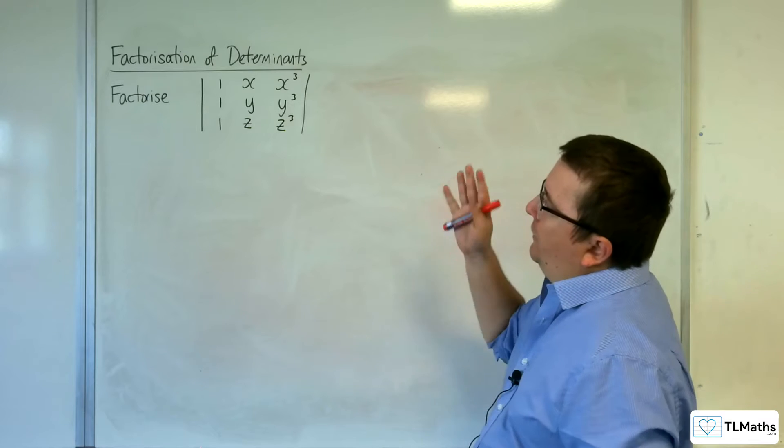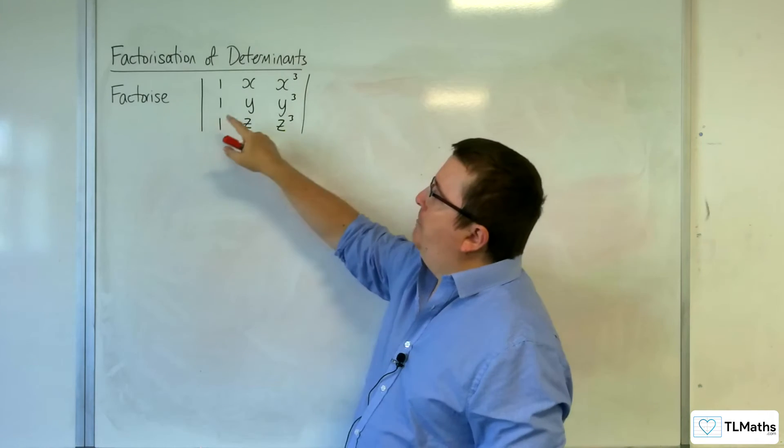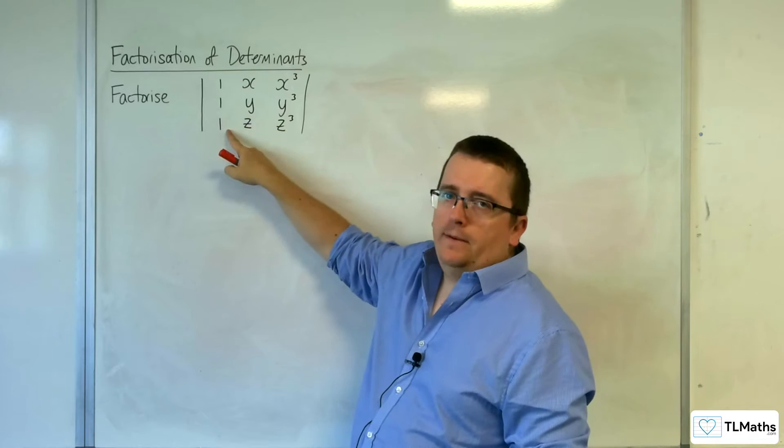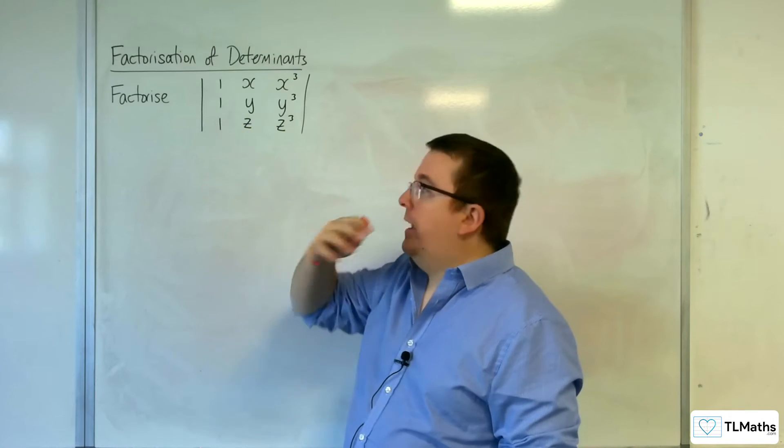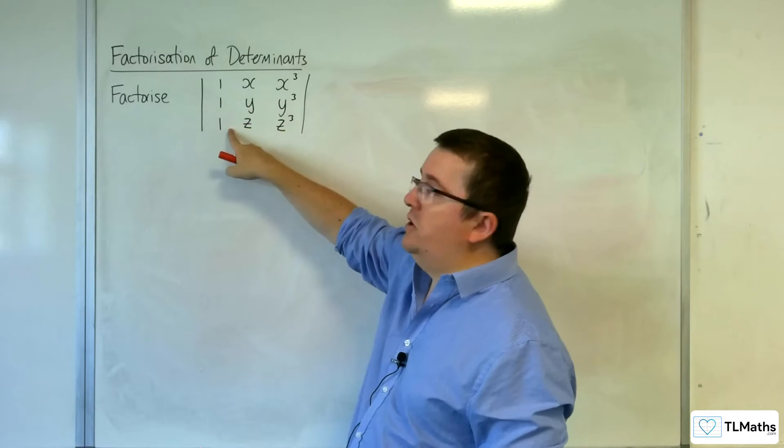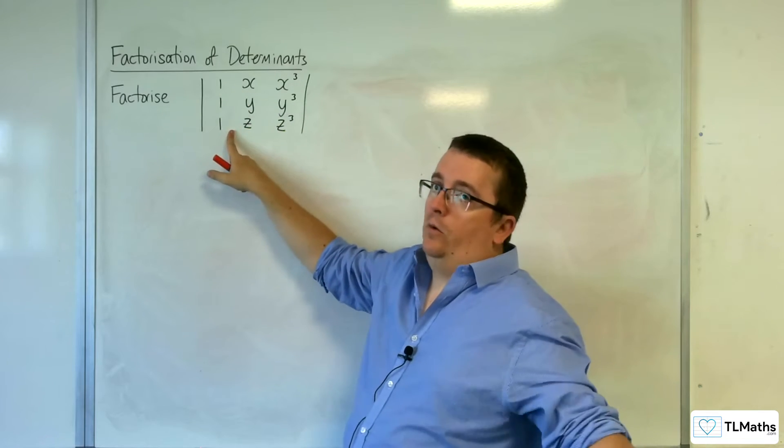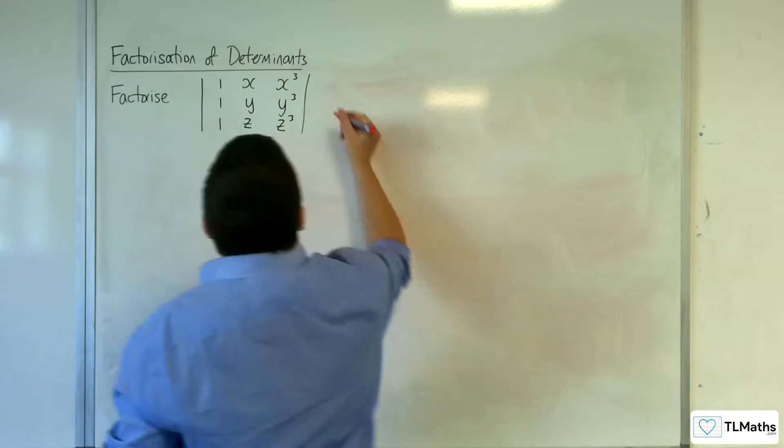We've got this matrix with 1, x, x cubed; 1, y, y cubed; 1, z, z cubed. And because you've got the 1s already here, what you want to do is get rid of those 1s, because if you can get 1, 0, 0, it makes finding the determinant a whole lot easier. So, that's what I'm going to do.